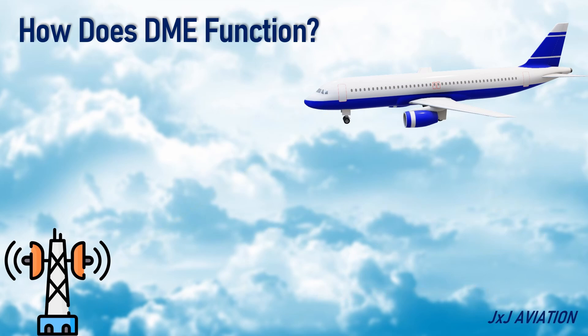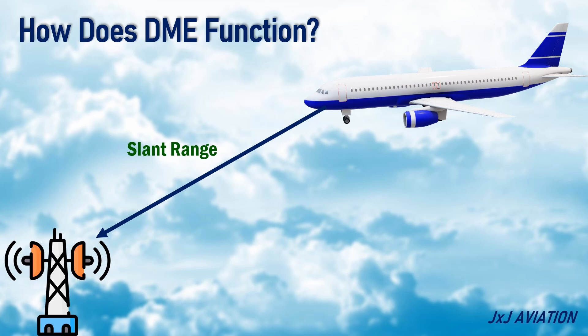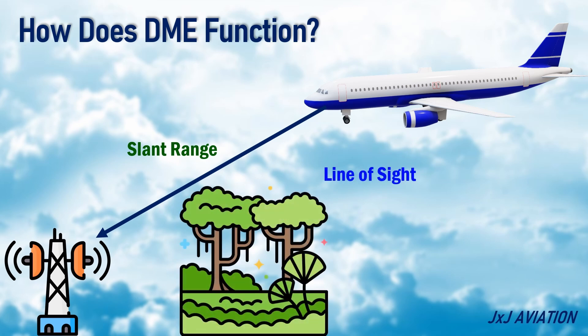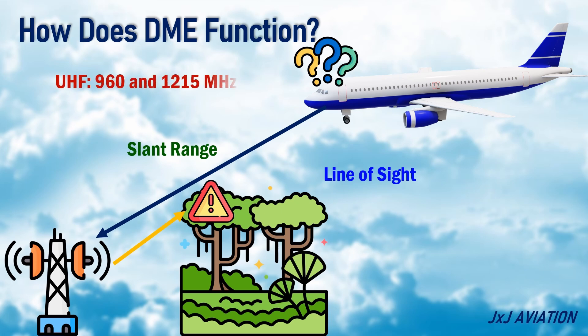The DME gives the slant range of an aircraft from the ground equipment. The equipment works on the line-of-sight principle, so in case of any obstacles between the aircraft and the ground station, the signals would not be received. The DME operates in the ultra-high frequency range.